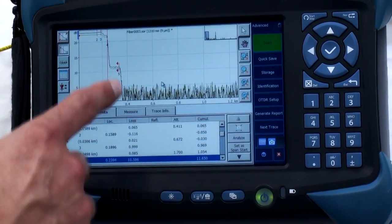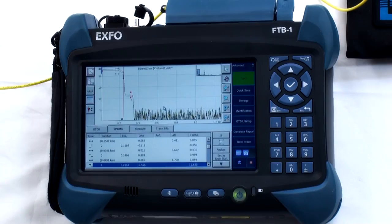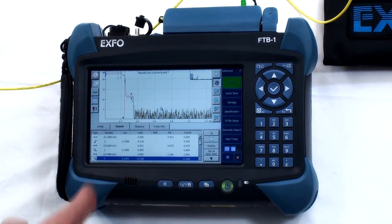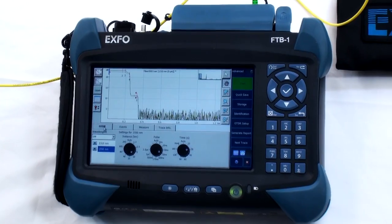However, we can see the loss of the second splitter will not be accurate as the pulse width does not have sufficient dynamic range. Now in this case, I will have to use a third acquisition with a larger pulse width that provides more dynamic range to reach the end of the fiber.